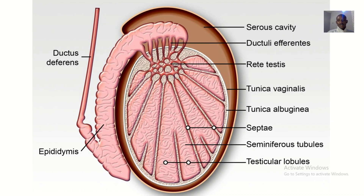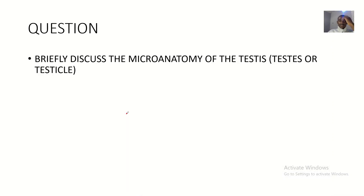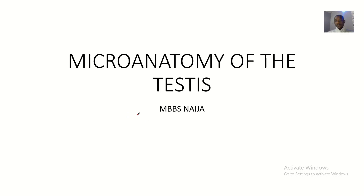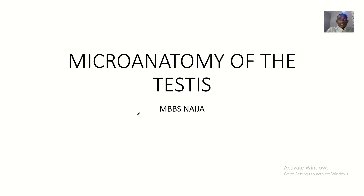Good evening and welcome to this tutorial. Today we'll be talking about the micro anatomy of the testes. Micro anatomy — we spoke briefly on the testes when we were talking about reproductive physiology, where we said that spermatogenesis happens in the testes. That was a brief overview; we didn't talk about the structure of the testes and all those micro details. Micro anatomy is going deep into the small details that people feel should be neglected.